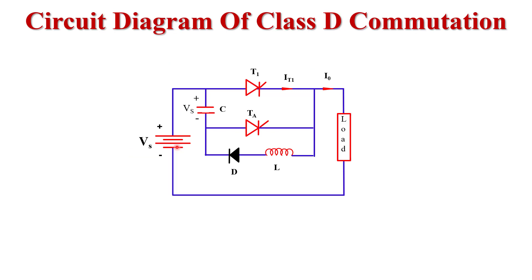Now we discuss the circuit diagram of Class D commutation. Here we use a DC supply voltage Vs at the input side. We use DC supply because Class D commutation falls under the category of force commutation, and in any force commutation circuit we use a DC supply at the input side.